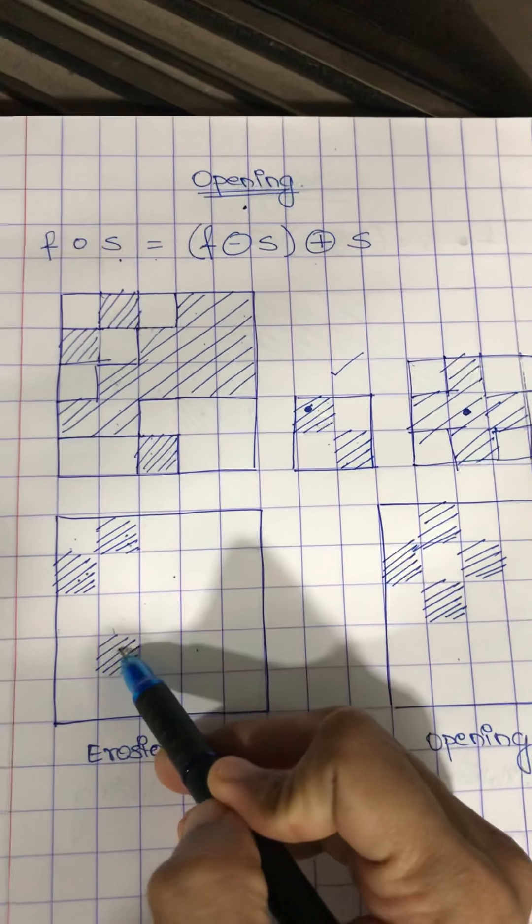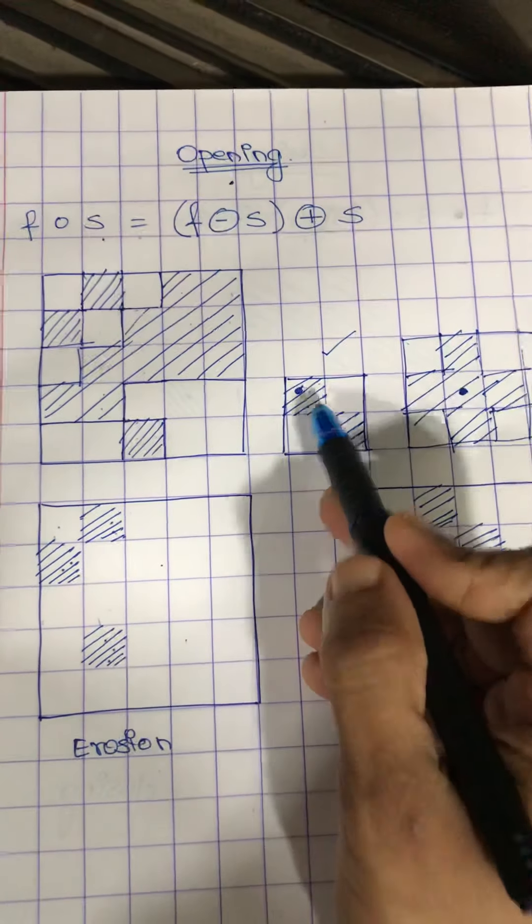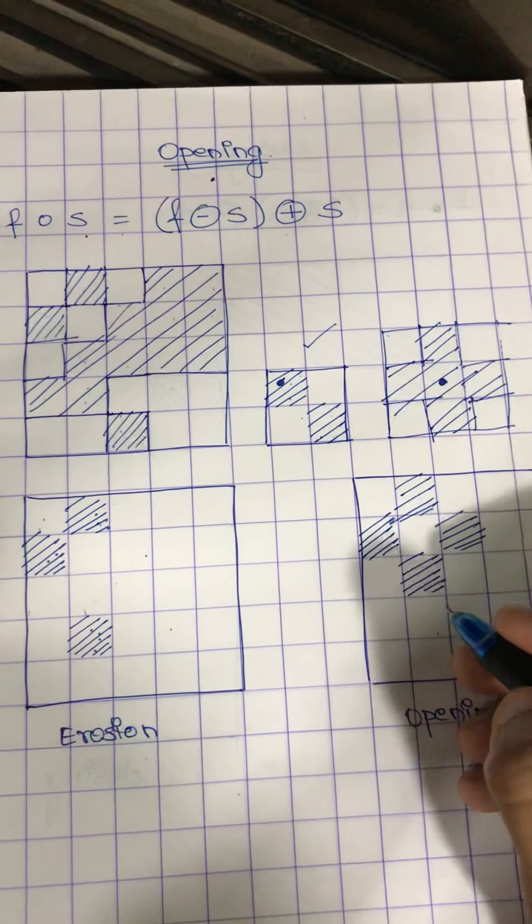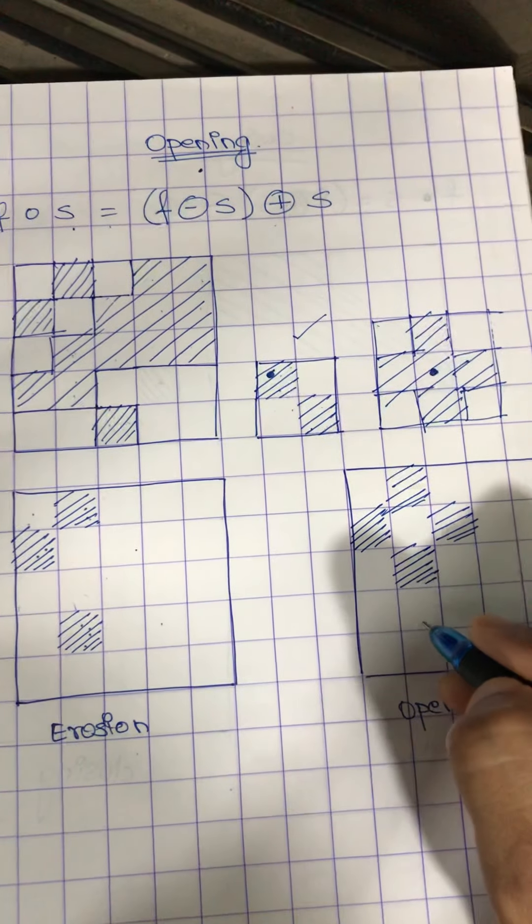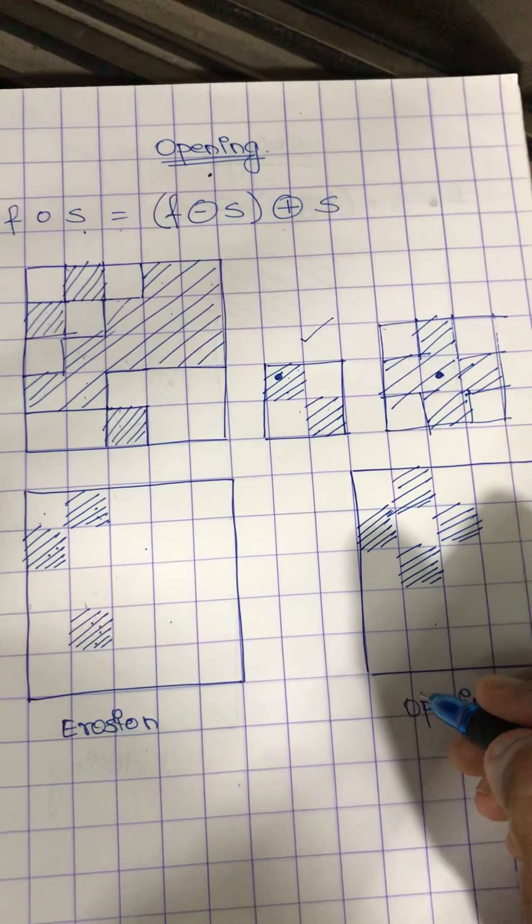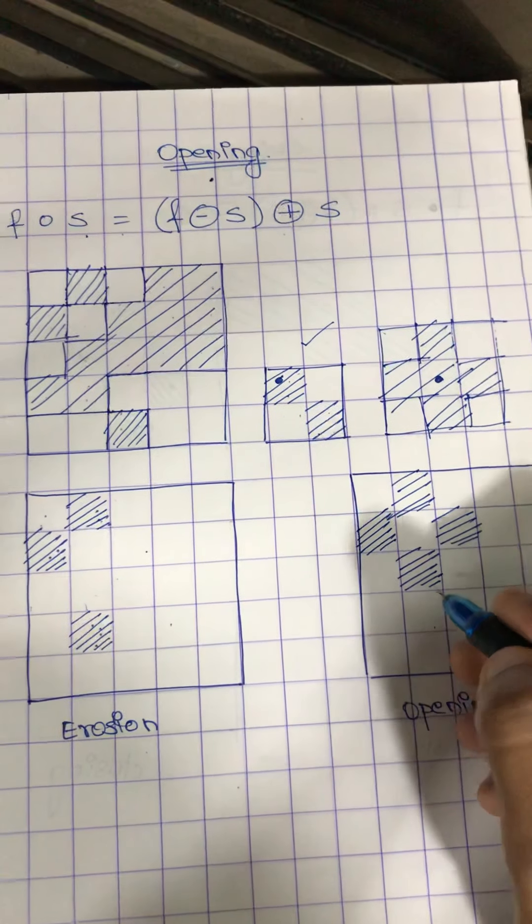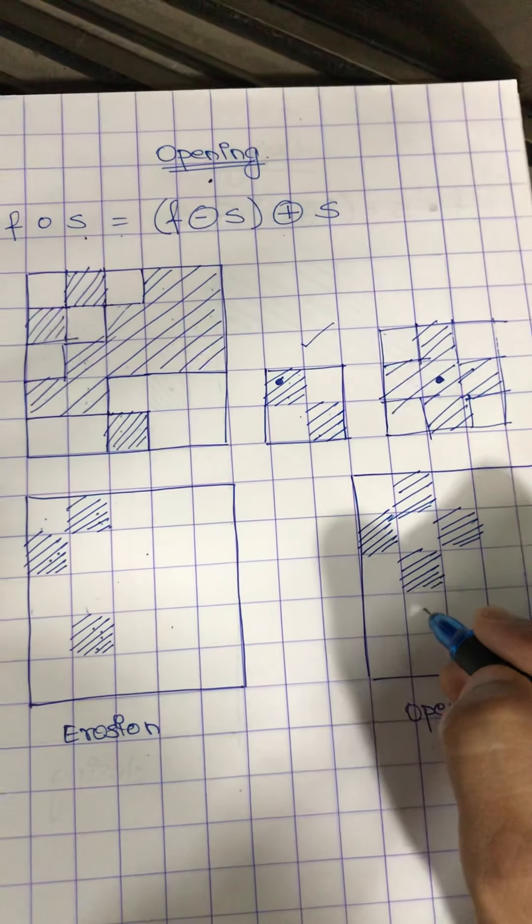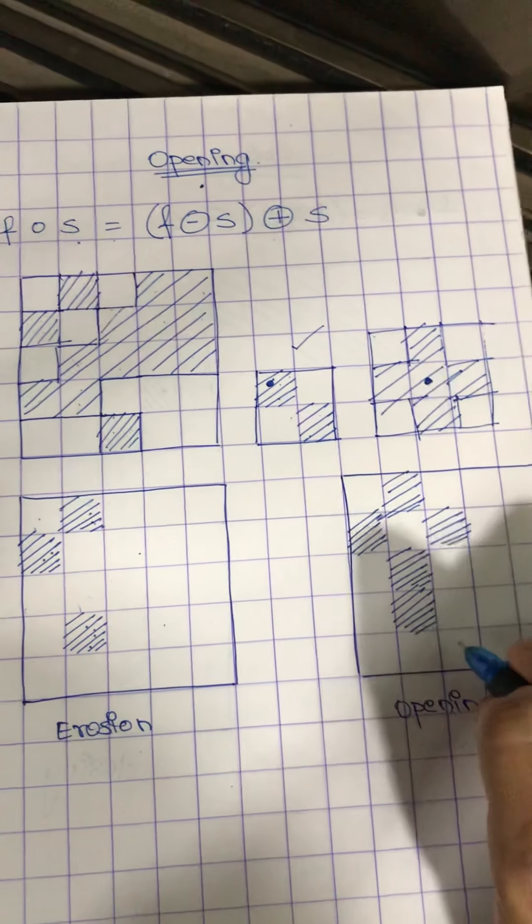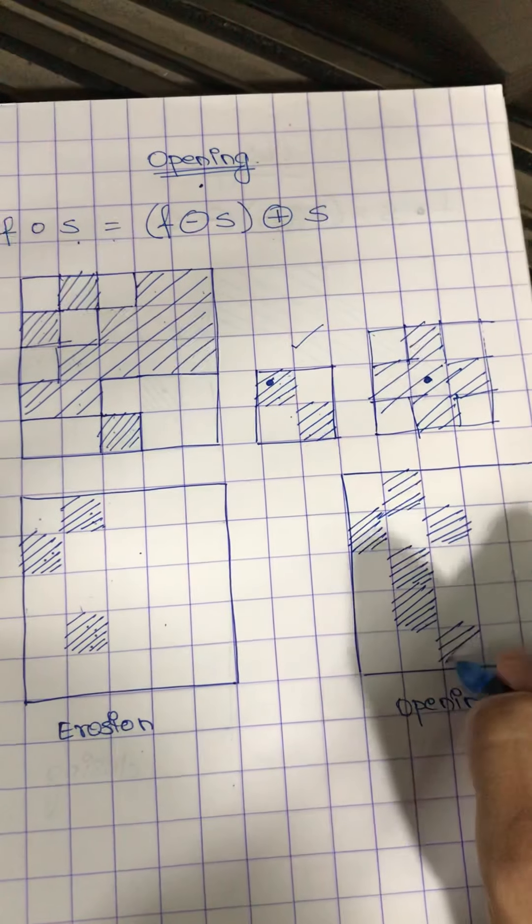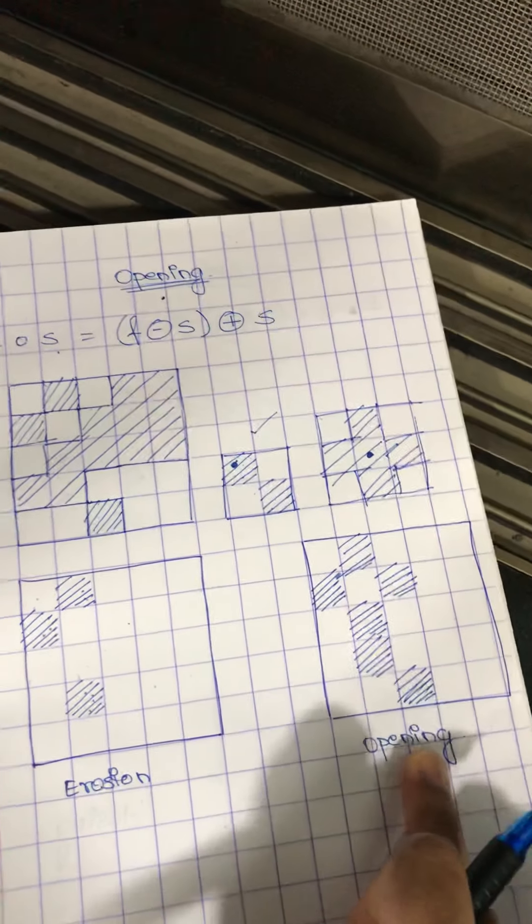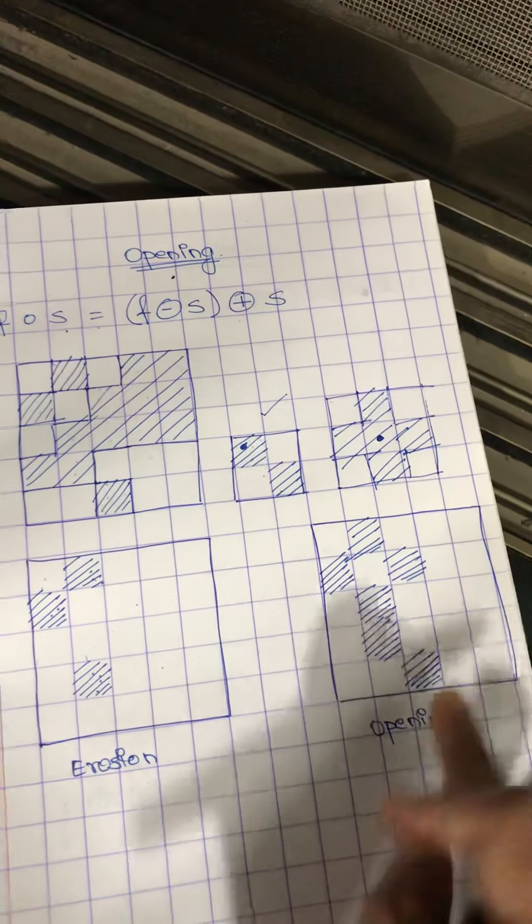And at this pixel, if I place my structuring element at this pixel, so even here, so yeah, this is my pixel. So this is the output of opening operator.